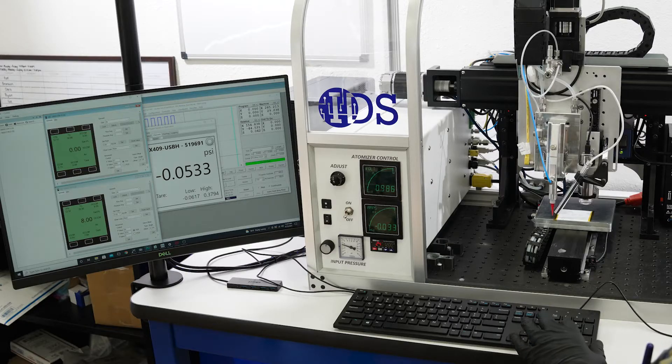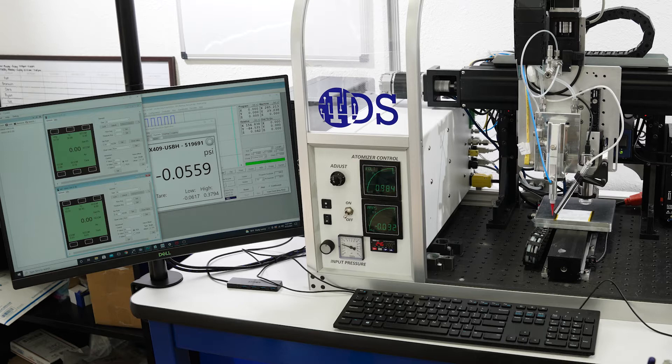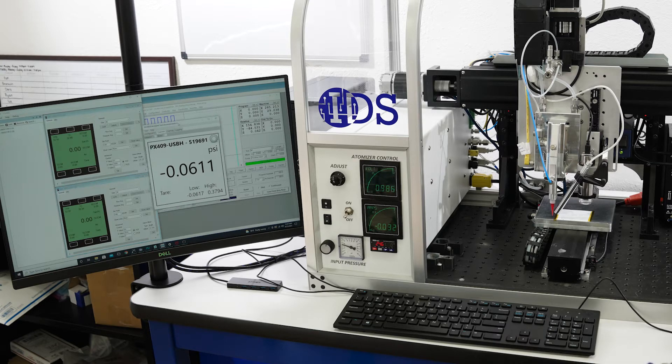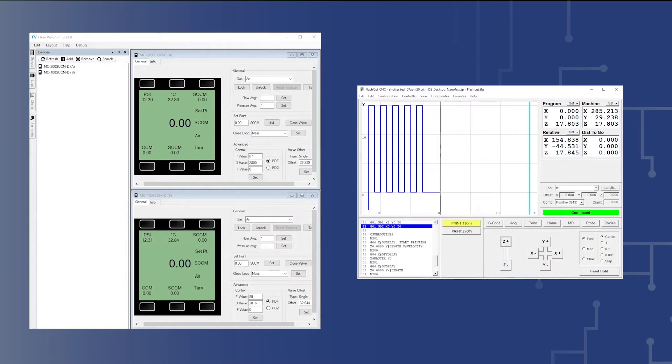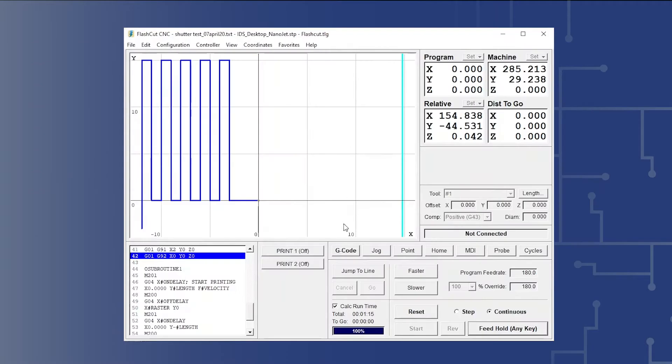The next step is to set up the pressure transducer software to monitor the pressure in the NanoJet printer during pressure testing. To set up the software, we will perform the following steps. 1. Toggle the NanoJet shutter setting and flash cut so the print off indicator is displayed.